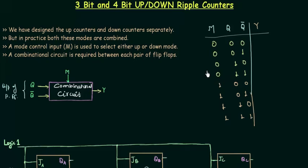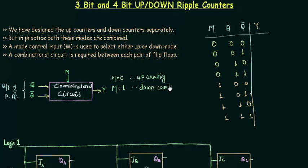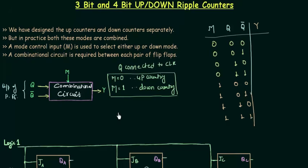Whenever the value of M is equal to 0, it will do the up counting, and whenever the value of M is equal to 1 or it is high, it will do the down counting. So this is the logic we will use in our table, and finally we will have a K-map and our combinational circuit. Whenever M is 0, Q is connected to the clock of the next flip-flop, and whenever M equals 1 it means down counting, so Q complement is connected to the clock of the next flip-flop.